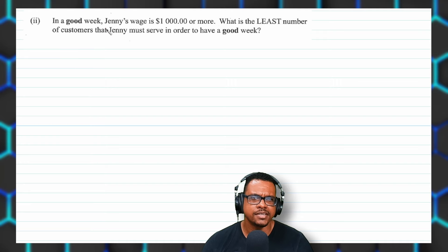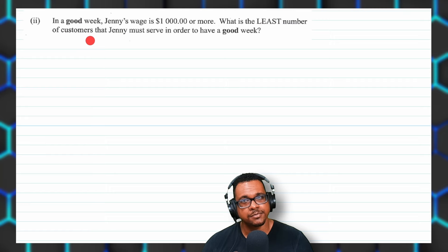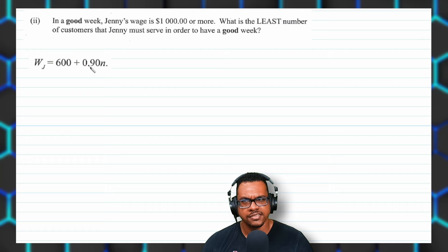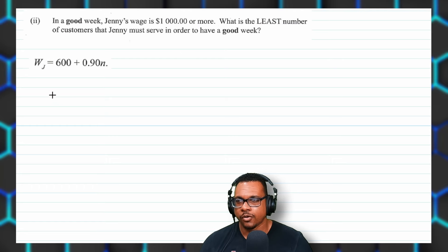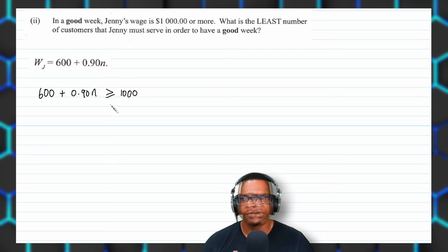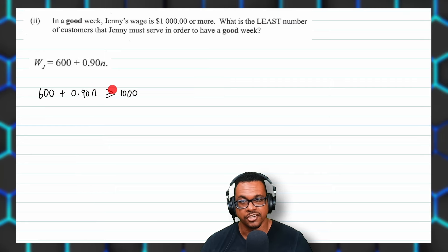For part two: in a good week, Jenny's wage is $1,000 or more. What is the least number of customers Jenny must serve to have a good week? We want 600 plus 0.90 times N to be greater than or equal to 1,000. So: 0.90N is greater than or equal to 1,000 minus 600. Transferring the positive 600 across the inequality sign changes it to negative, giving 0.90N ≥ 400.